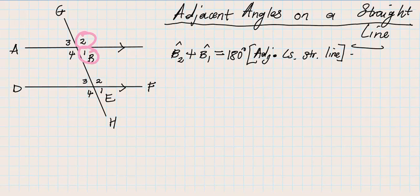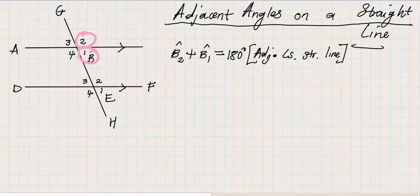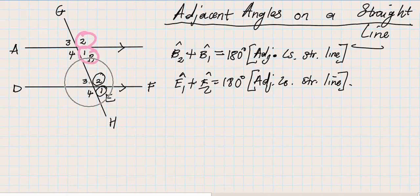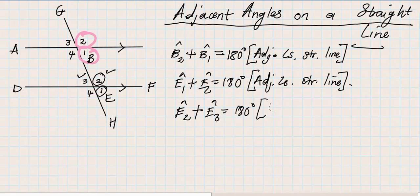I hope you paused the video — I know there are people who don't. We dealt with B1 and B2. Another pair of adjacent angles is E1 and E2. If I add E1 with angle E2, I must get 180 degrees, because these are adjacent angles on a straight line. Next: E2 and E3. If I add E2 with E3, I get 180 degrees, because these are adjacent angles on a straight line.